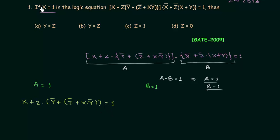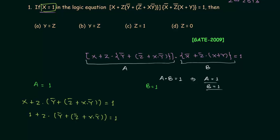In this problem it is already given that x is equal to 1. So we have 1 OR z AND y complement OR z complement OR x AND y complement is equal to 1. We already know that anything OR'd with 1 is equal to 1, so this entire term evaluates to 1 regardless of the other values.